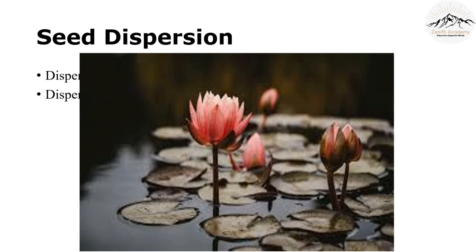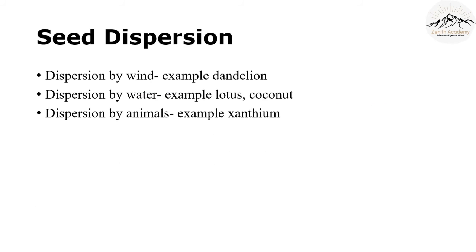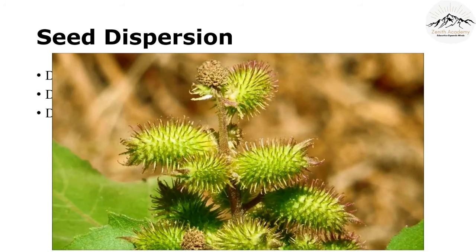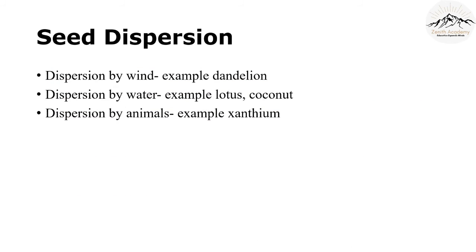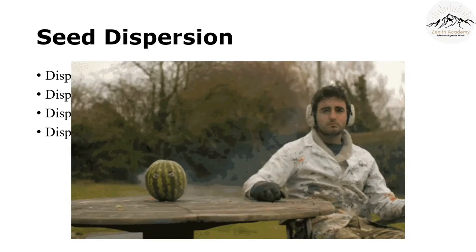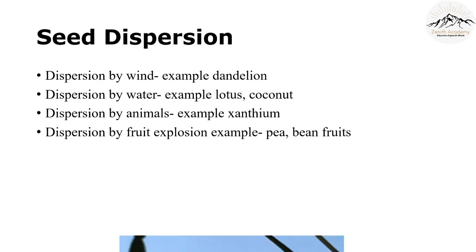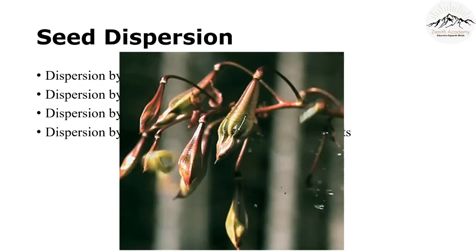For example, lotus can stay above water and can disperse seeds in water. The third method is dispersal by animals. Animals may eat fruits and throw the seeds away, or some seeds can cling on the bodies of animals and then get carried away. An example is xanthium, which has spikes that can stick on your clothes and get carried away somewhere else. The fourth method is dispersal by fruit explosion. Some seeds like poppy, pea and bean burst open on ripening, and the seeds get scattered in all directions.